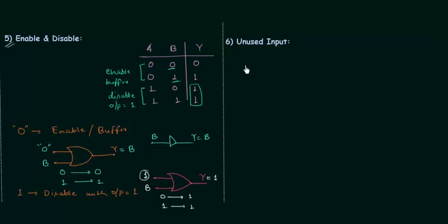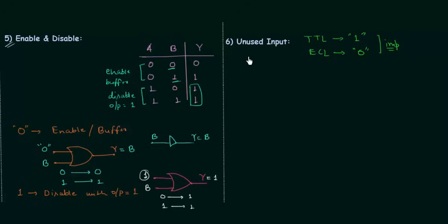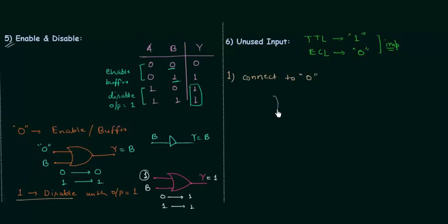Now we will move to unused input. In case of TTL logic, unused input or floating input is equal to 1 — this is very important and you will find exam questions on this concept. Now, to deal with unused input in OR gate: in the first way, we connect unused input to 0. We do this because 1 is disable for OR gate, and we don't want our gate to be disabled.